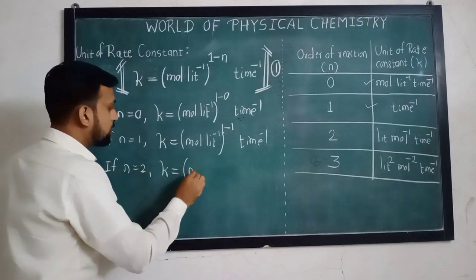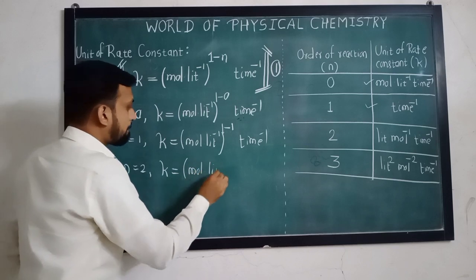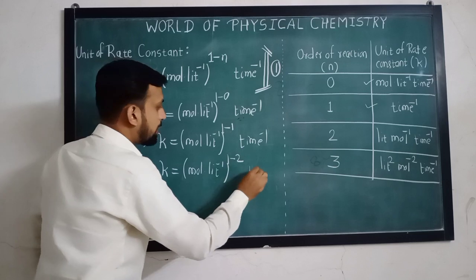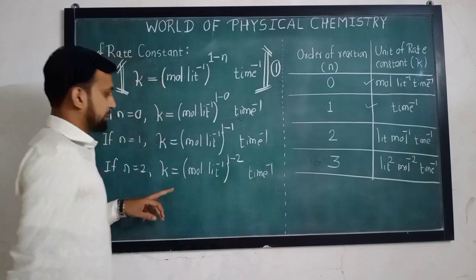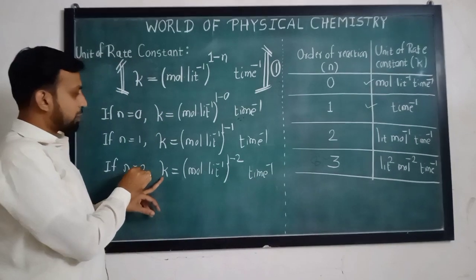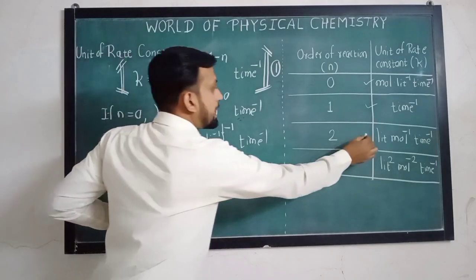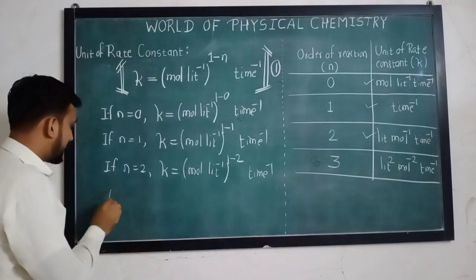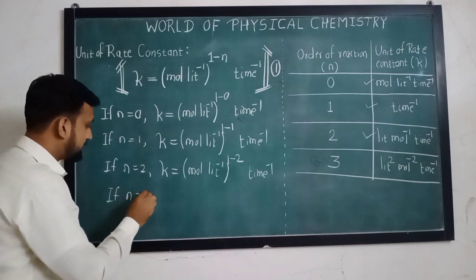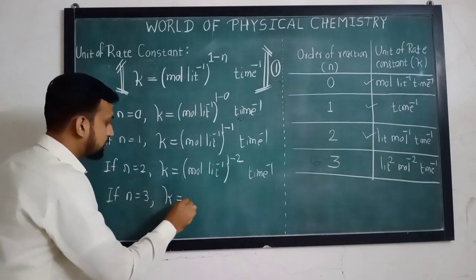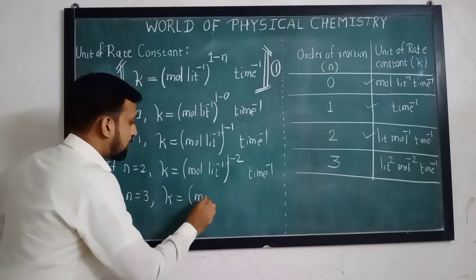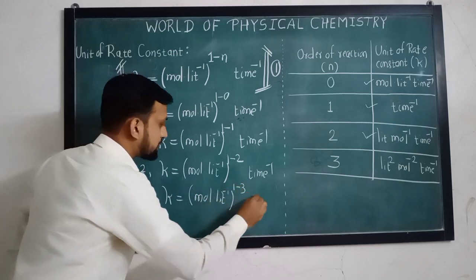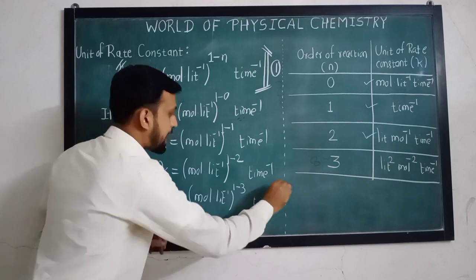If n is equal to 2, K is equal to mol per liter raised to 1 minus 2, per time. The unit of K for a second order reaction is liter per mol per time. And if n is equal to 3, then the unit of K becomes mol per liter raised to 1 minus 3, per time.